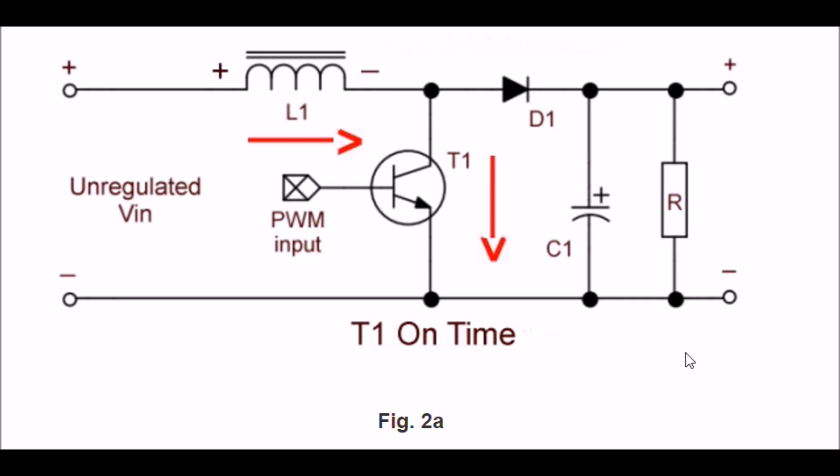Now we're looking at a different configuration called a buck-boost. Note how I've changed the positions of D1 and L1. When T1 is turned on, current will flow through L1 through T1 to ground. Once again, very little or nothing is transferred to C1. Note that the polarity on L1 as the magnetic field is created.